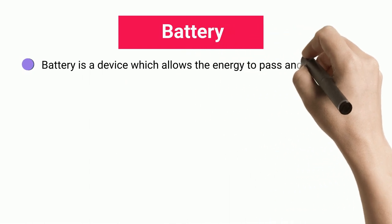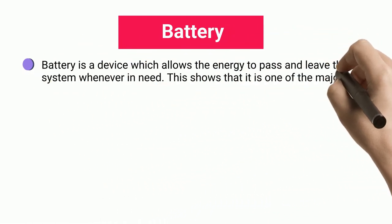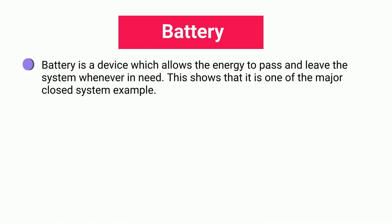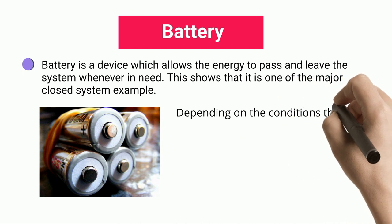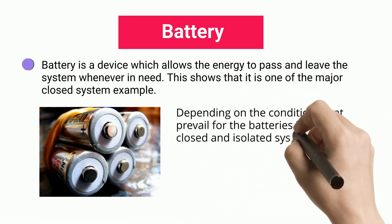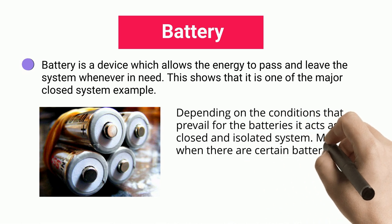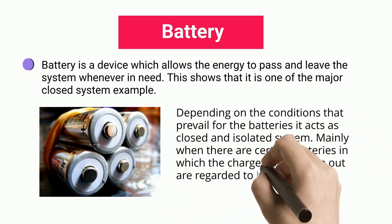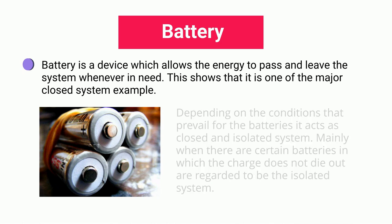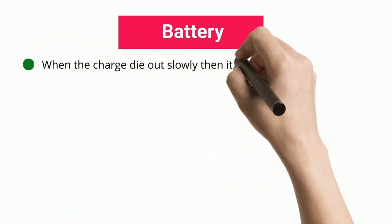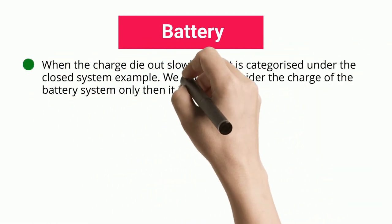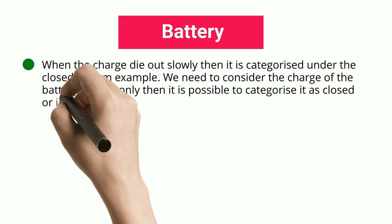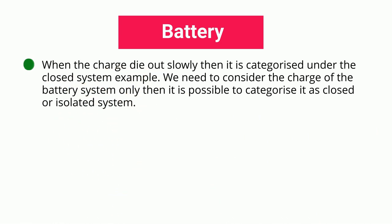A battery is a device which allows energy to pass and leave the system whenever needed, which shows it is one of the major closed system examples. Depending on the conditions, batteries can act as a closed or isolated system. When the charge does not die out, it is regarded as an isolated system; when the charge dies out slowly, it is categorized under the closed system example. We need to consider the charge of the battery system in order to categorize it as closed or isolated.